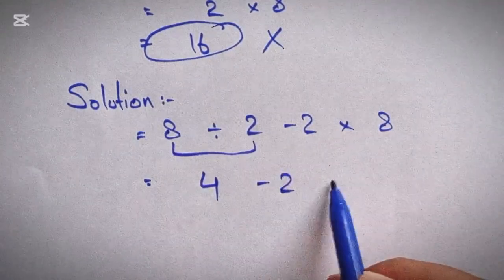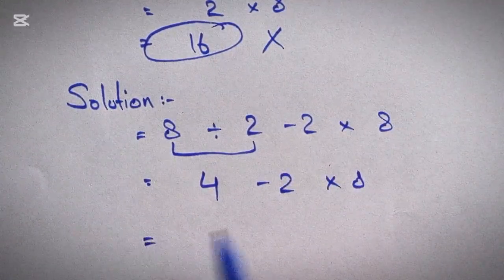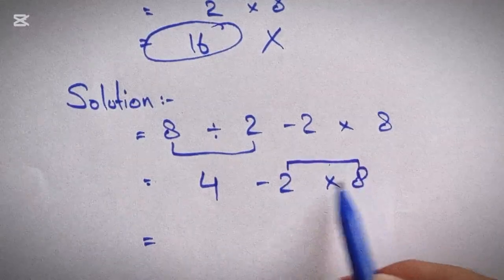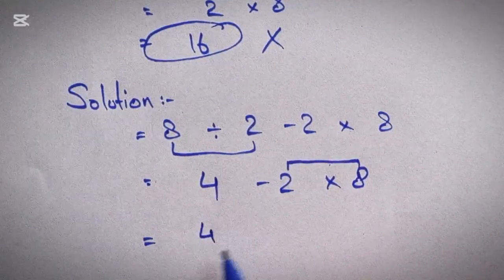Now 4 minus 2 times 8. We have one multiplication and one subtraction. So we will do multiplication first, then subtraction.